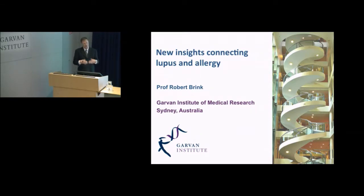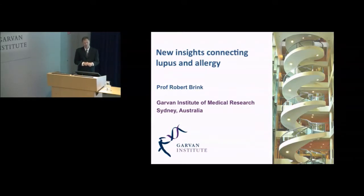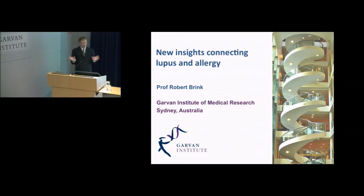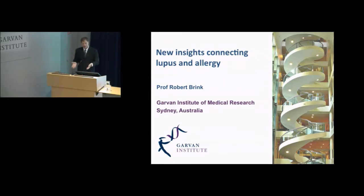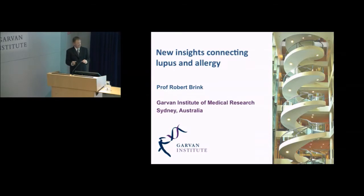Antibodies can also cause diseases — autoimmune diseases and allergy in particular. Some of the work we've been doing in the lab has been looking at the very basic mechanisms which control the cells which make antibodies, and how they can go wrong in autoimmune diseases such as lupus, and in allergies such as asthma. What we found was quite amazing to us — a connection between these two types of diseases and the basic ways that these diseases can emerge.